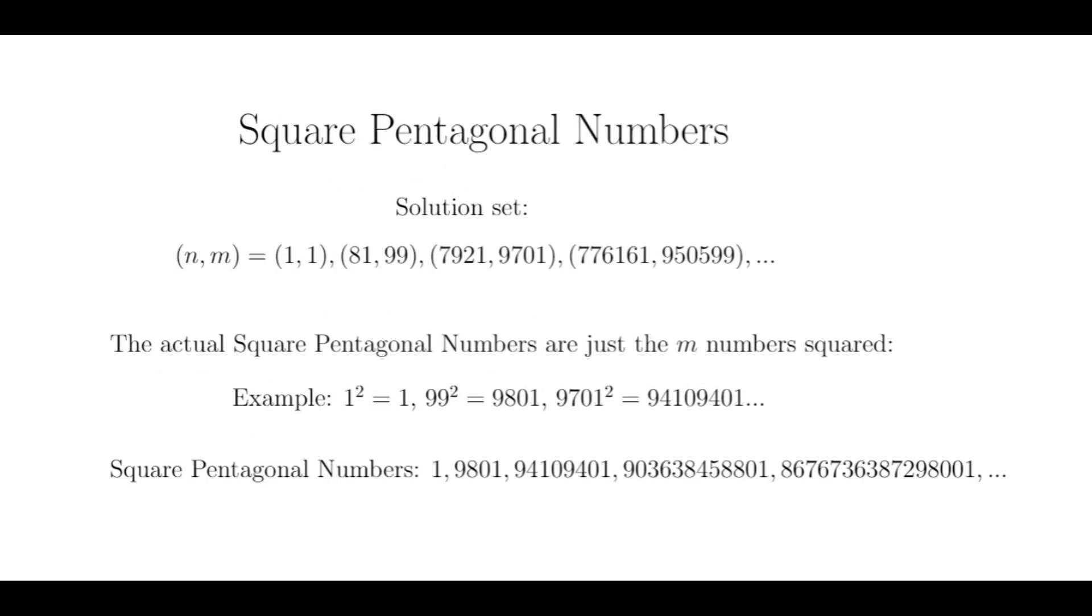To get our list of square pentagonal numbers, I can just square the second index m. So I get 1 squared is 1, 99 squared is 9801, 9701 squared is 94,109,401, and so on. This is our list of square pentagonal numbers.